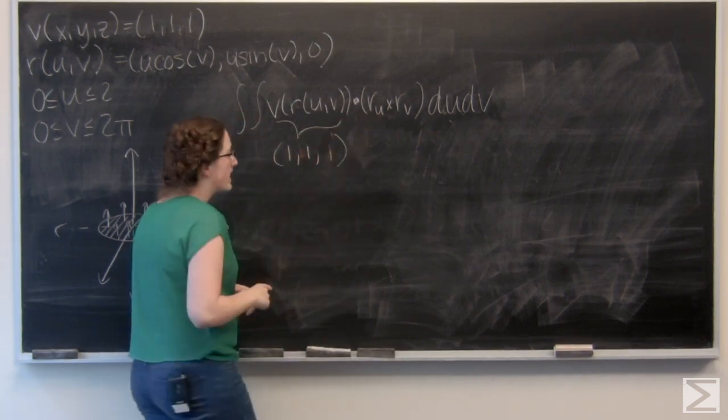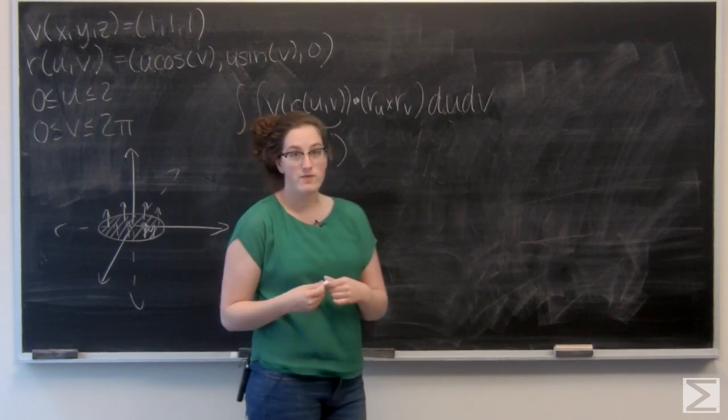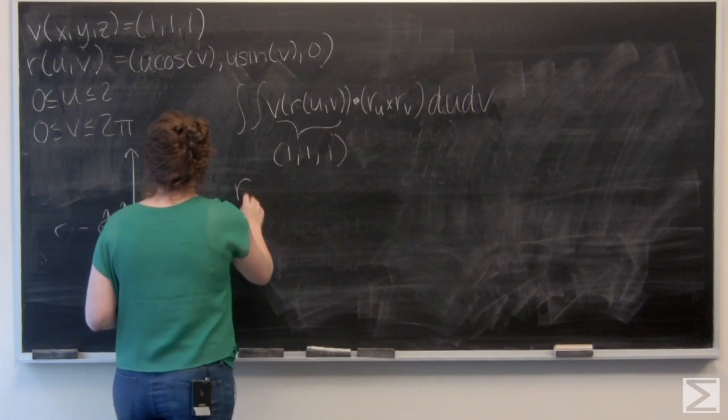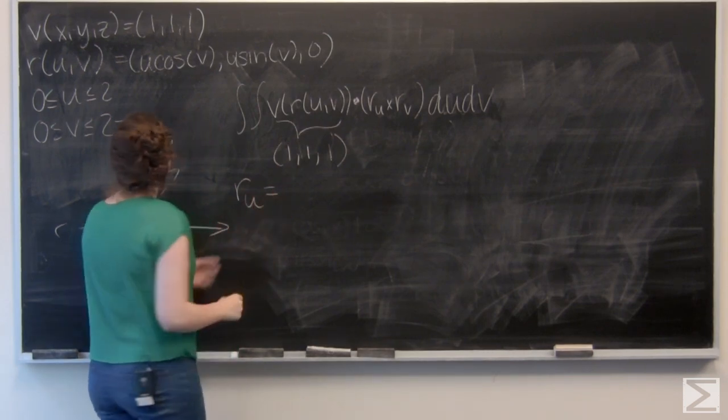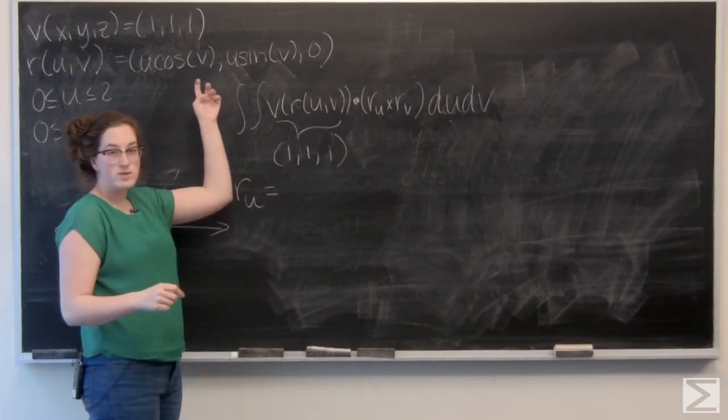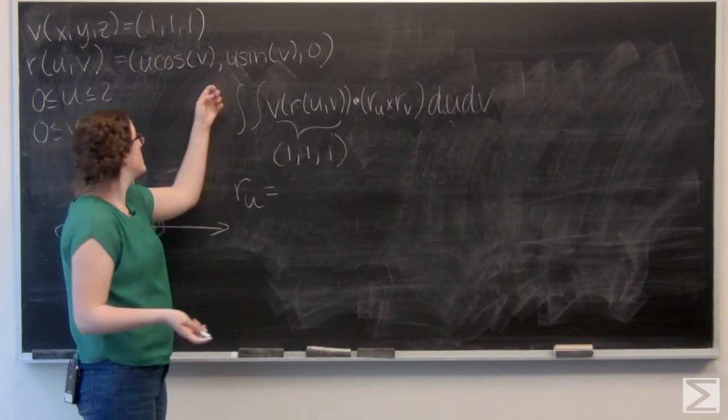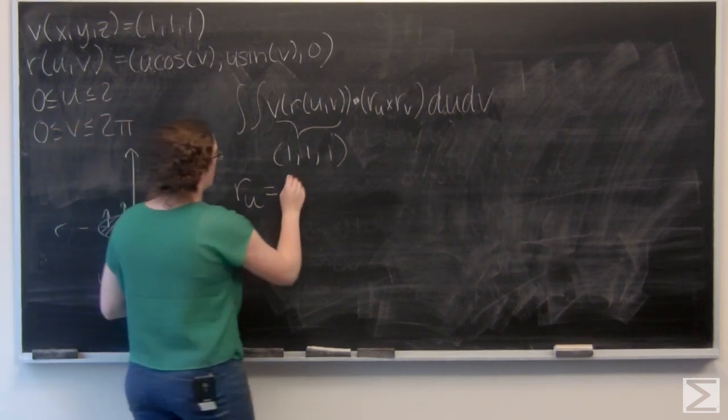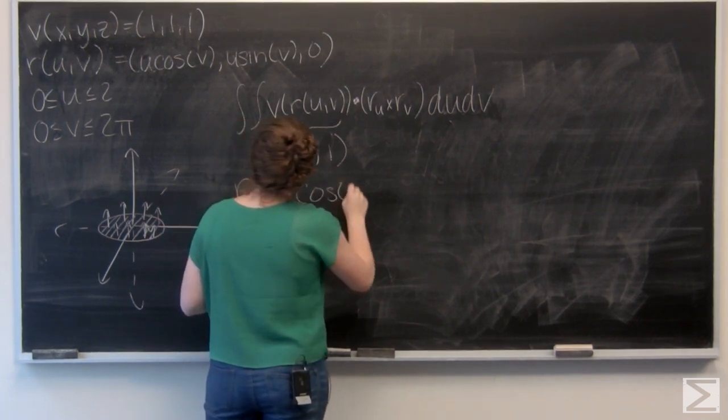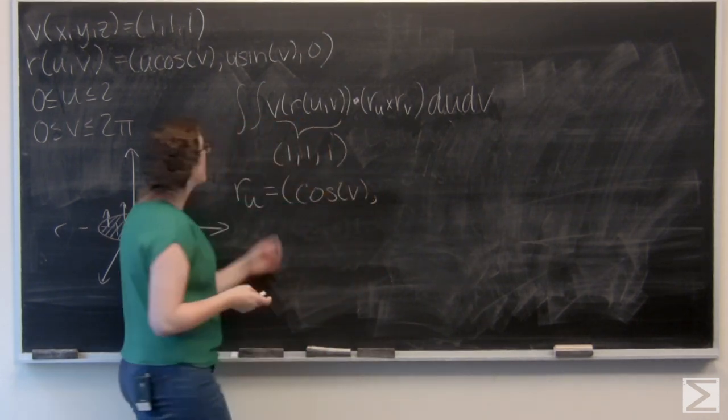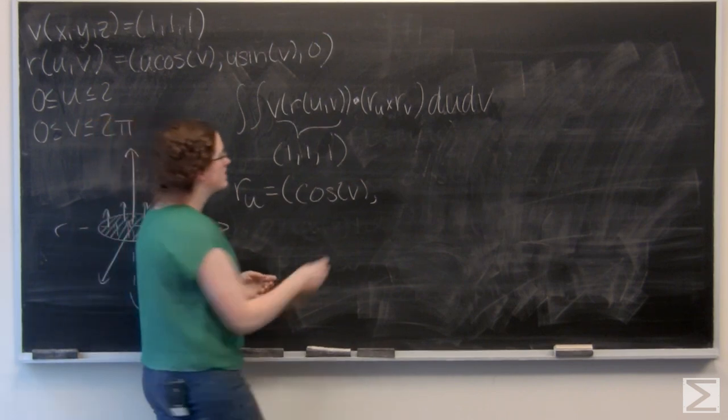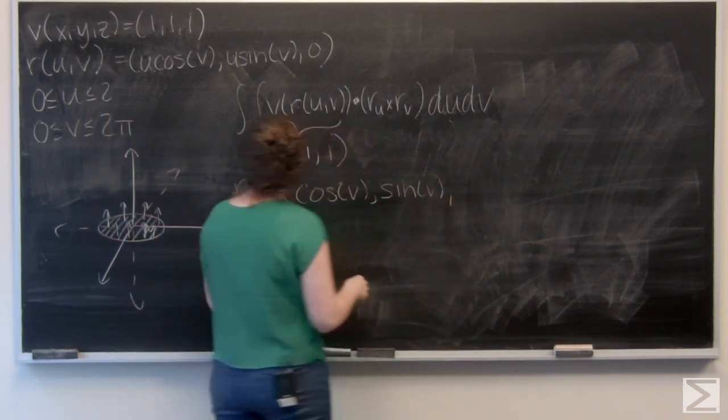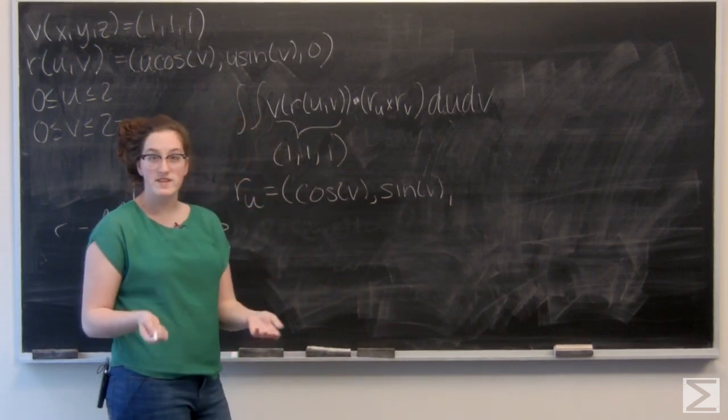And now I need to find r u cross r v. So first I need to find those partial derivatives. So let's go ahead and do that. I'm going to start with r u. So just differentiate each term in r with respect to u. So u cosine of v becomes cosine of v. Likewise, u sine of v becomes sine of v. And the third component, zero, just stays zero.